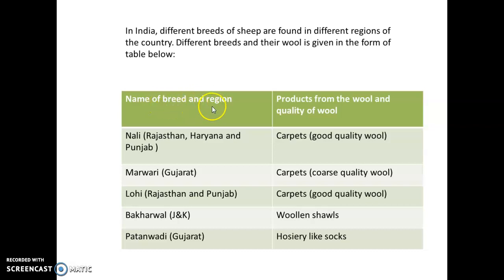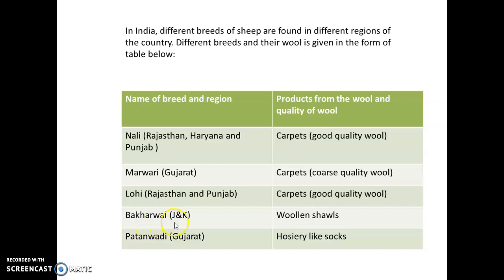Indian sheep breeds and their products: Nali, found in Rajasthan, Haryana, and Punjab, produces good quality carpet wool. Marwari, found in Gujarat, produces coarse quality carpet wool. Lohi, found in Rajasthan and Punjab, also produces good quality carpet wool. Bakarwal, found in Jammu and Kashmir, is used to make woolen shawls. Spartanwadi, found in Gujarat, is used to make hosiery like socks.